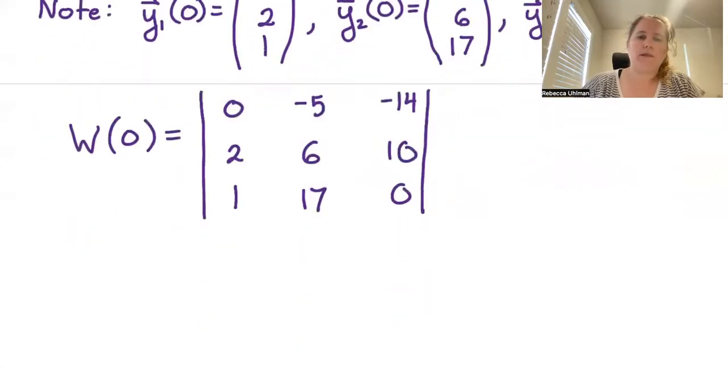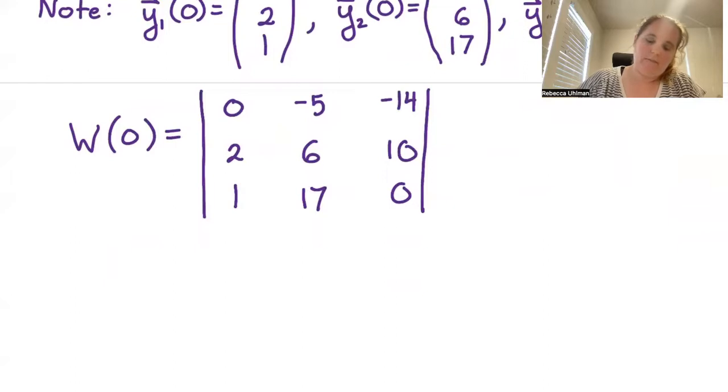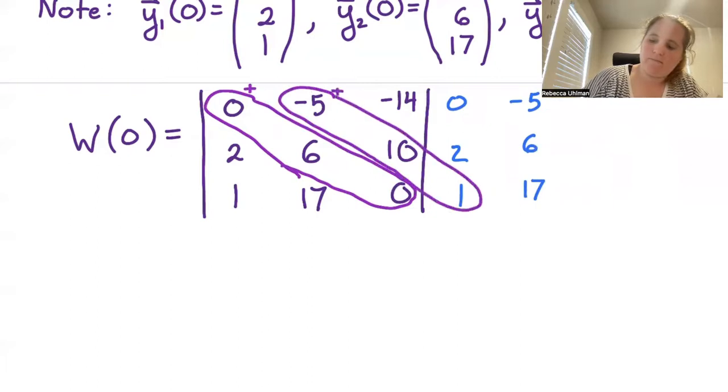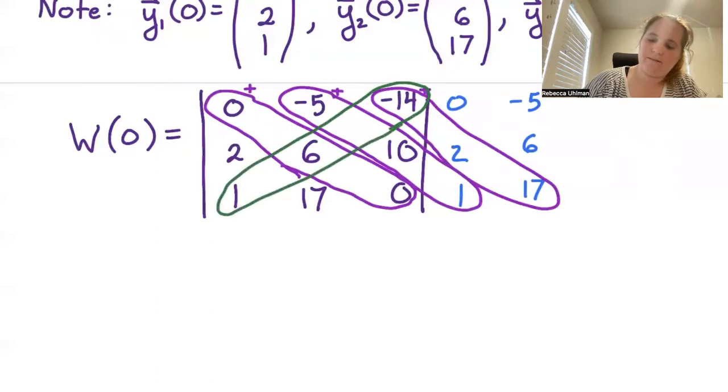Then we can go about just taking this determinant. I'm going to do the method where I just copy that first and second column, so we've got 0, 2, 1, negative 5, 6, 17, copy to the right. We add on the forward diagonals and subtract on the backwards diagonals.